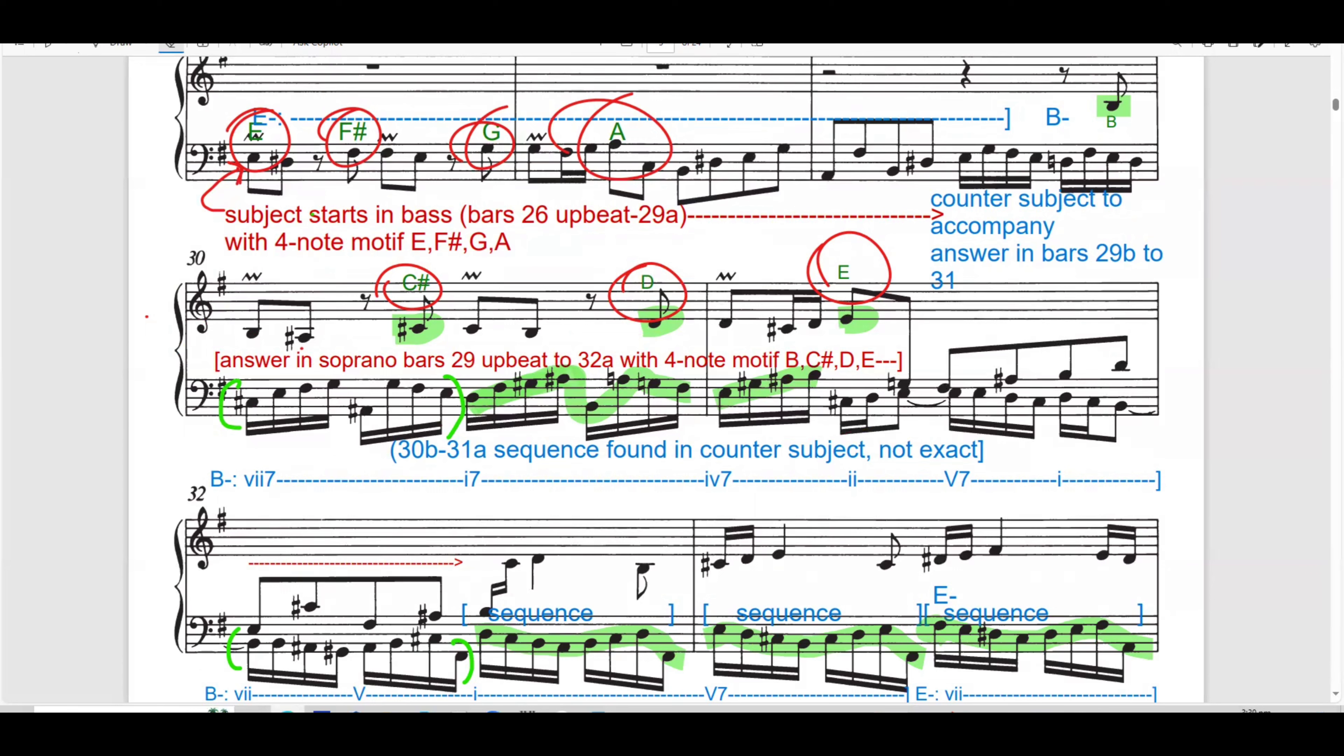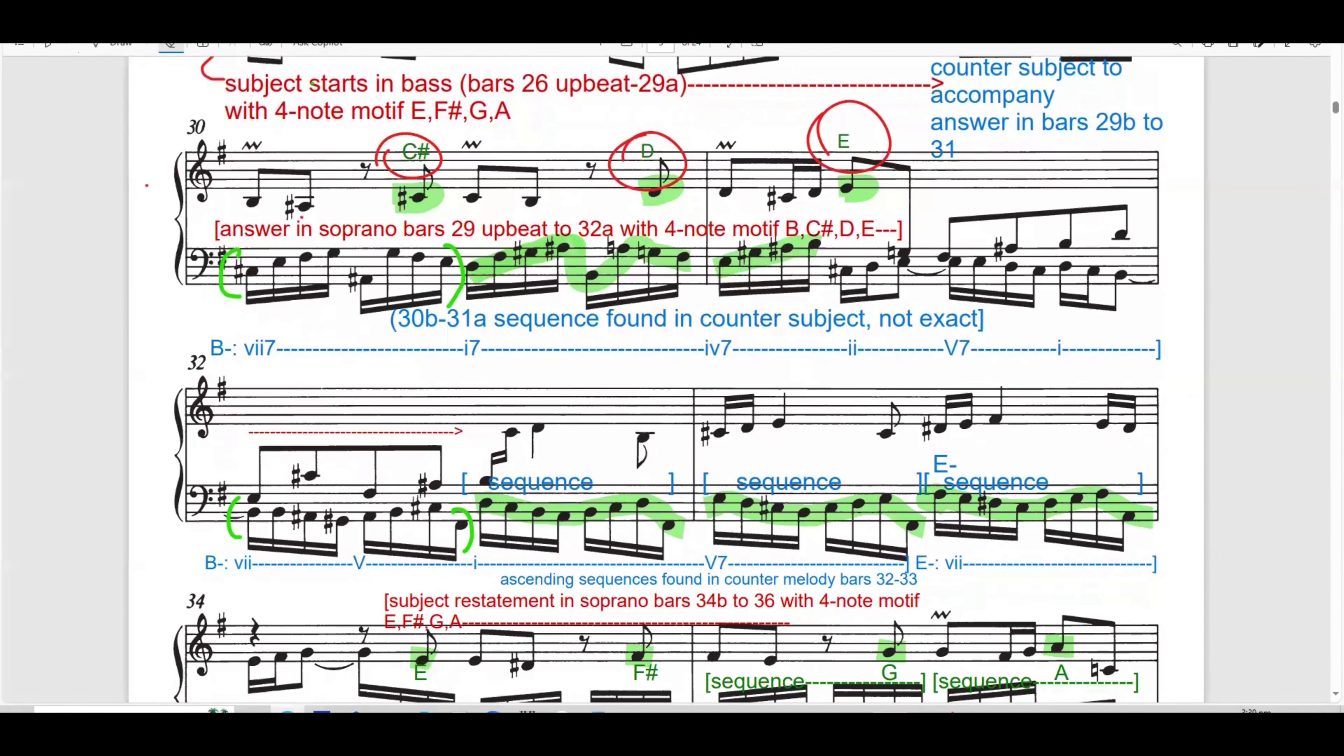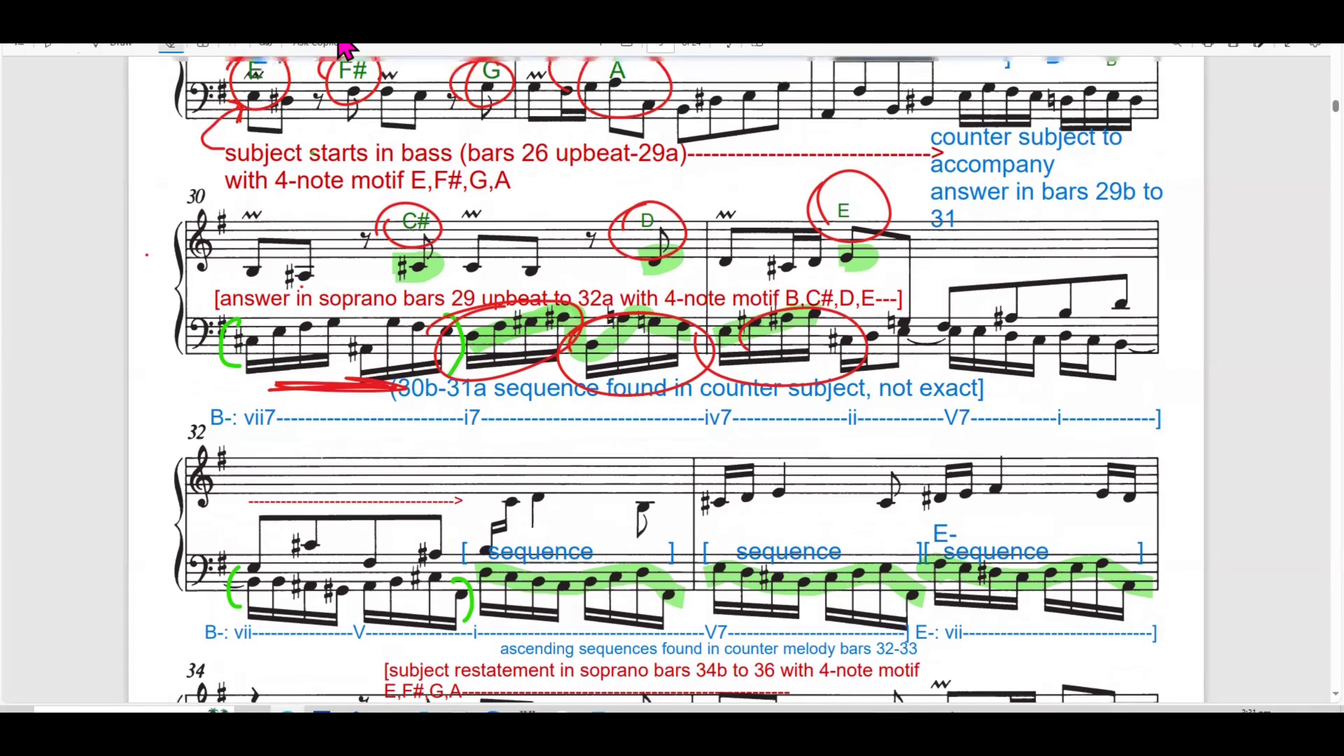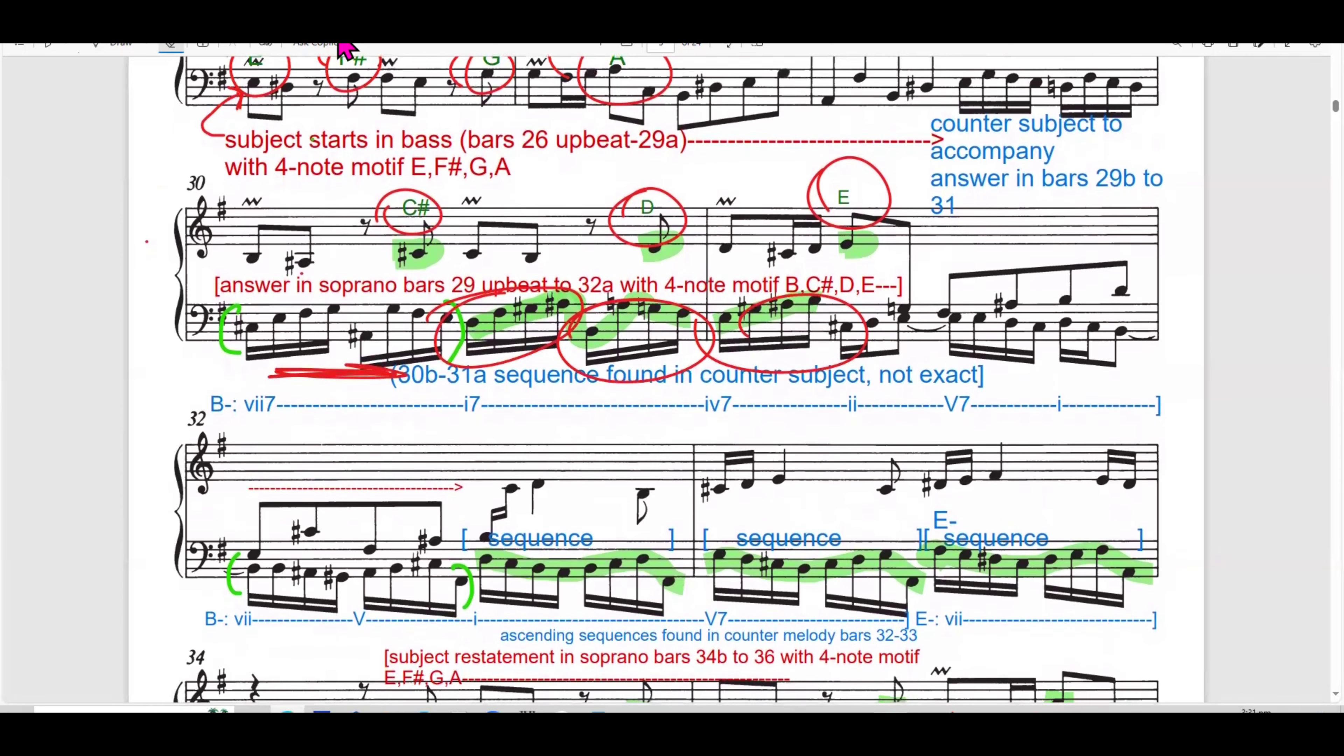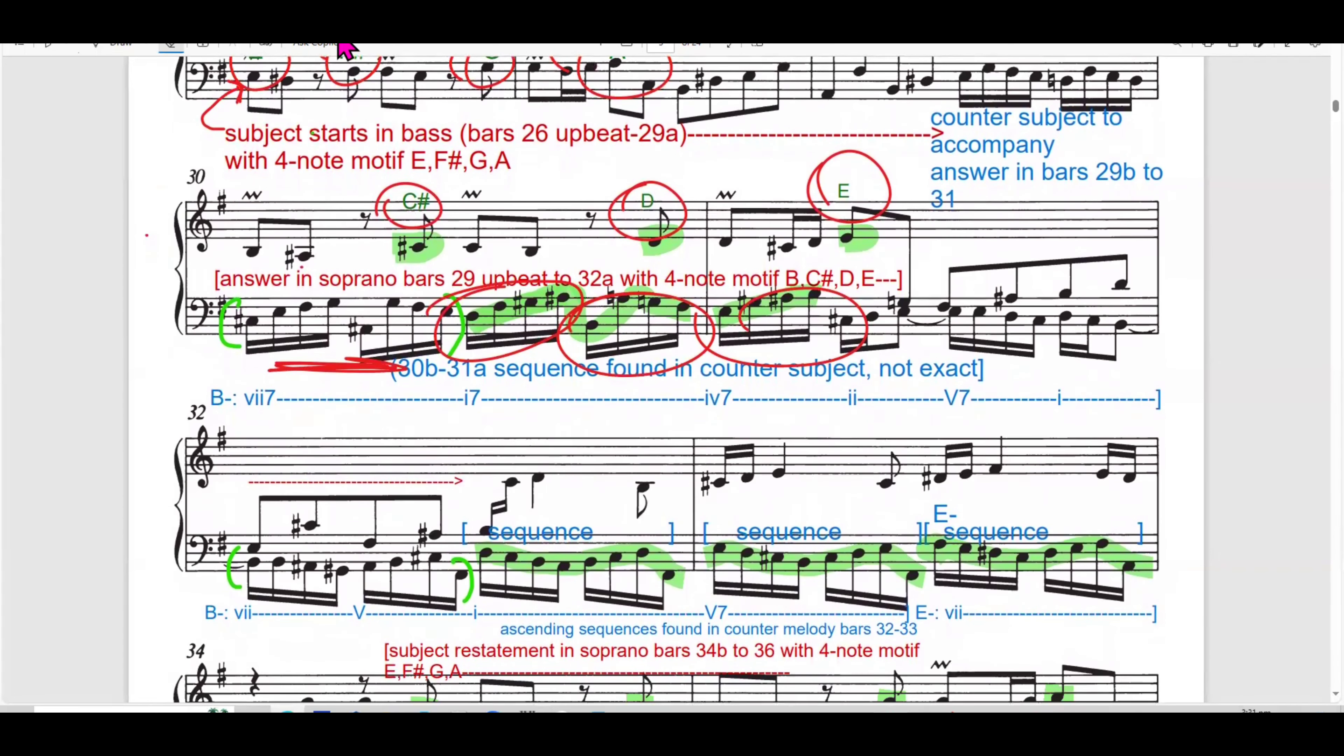Let's dive into the bar-by-bar analysis and explore Bach's polyphonic writing and harmonic progression. In bar 27, Bach begins in the bass voice. The subject begins with the bass voice, introduced with a four-note motif, E, F-sharp, G, A, in E minor. This motif formed the foundation for following imitative and sequential developments.